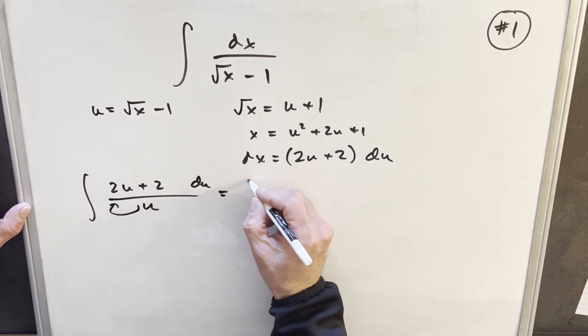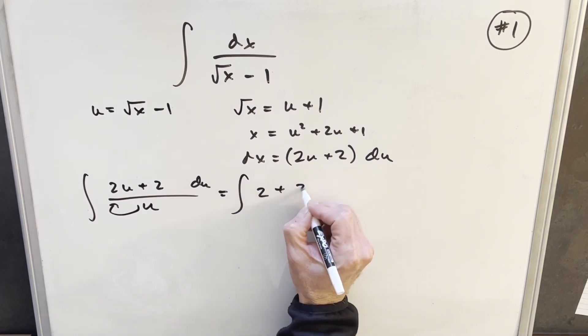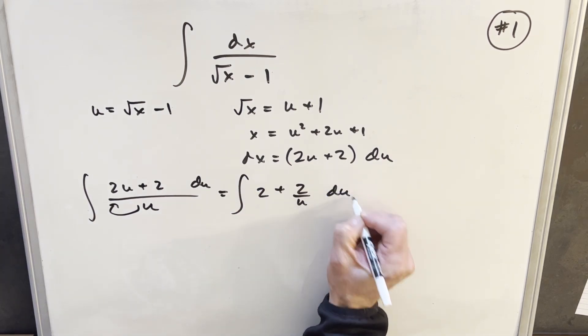Let's divide this into both terms. This becomes 2 plus 2 over u du.